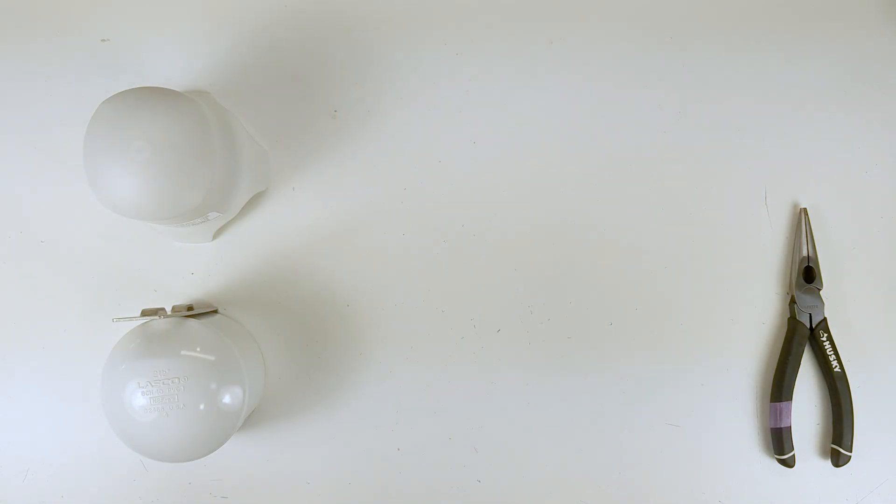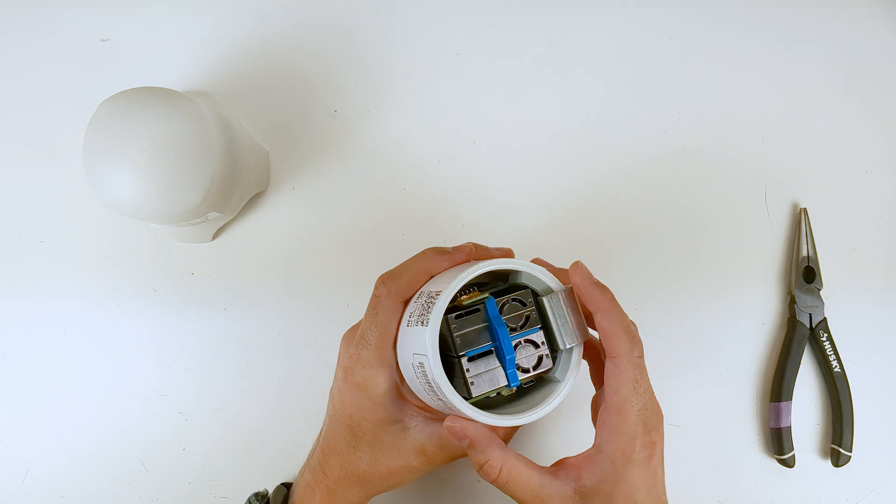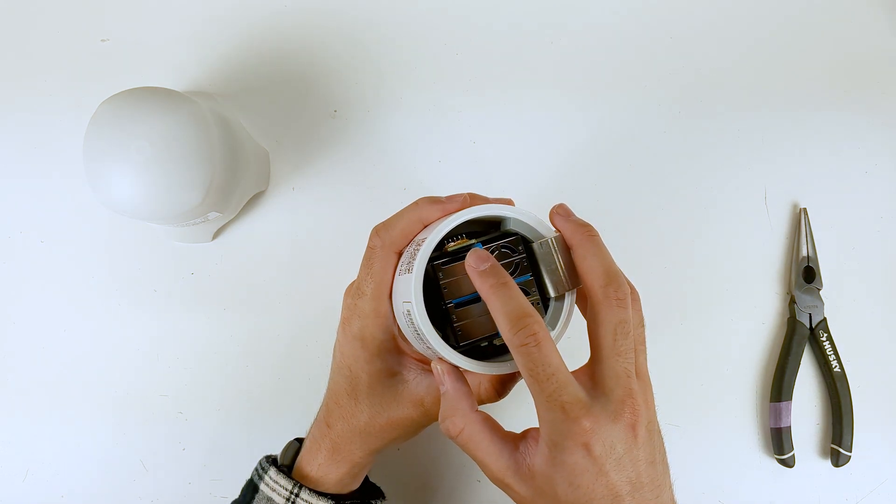This video will cover replacing the BME unit in Purpler Flex and Zen sensors. We will use needle-nose pliers to remove the BME units.